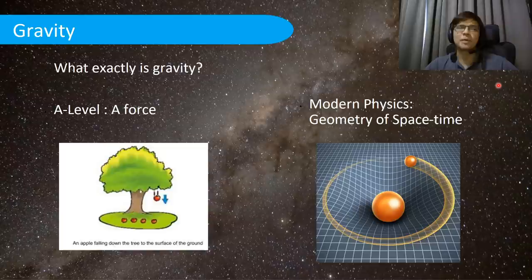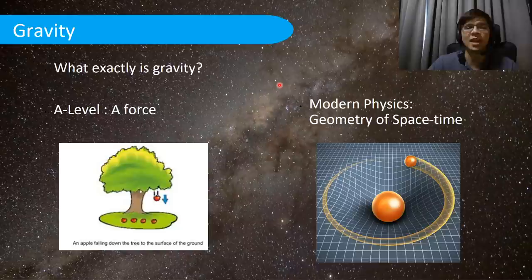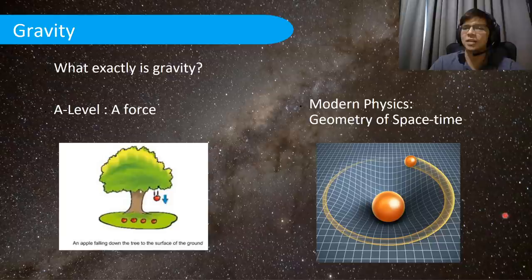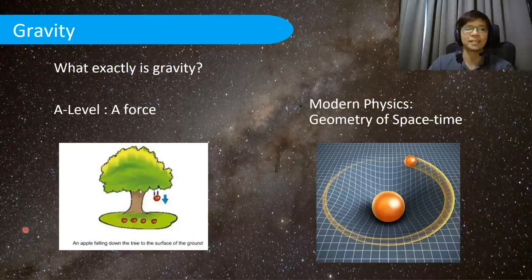Many students before studying gravity will have read about space-time and relativity. At A-level, we teach gravity as a force — similar to a push or pull — which is a fundamental and valid understanding. However, Einstein generalized this into the general theory of relativity, under which gravity is no longer a force; instead, objects with mass curve the space-time around them and other objects follow those curves. That is not A-level content, but it is very interesting for further study. We will only be covering gravity as a force at A-level.